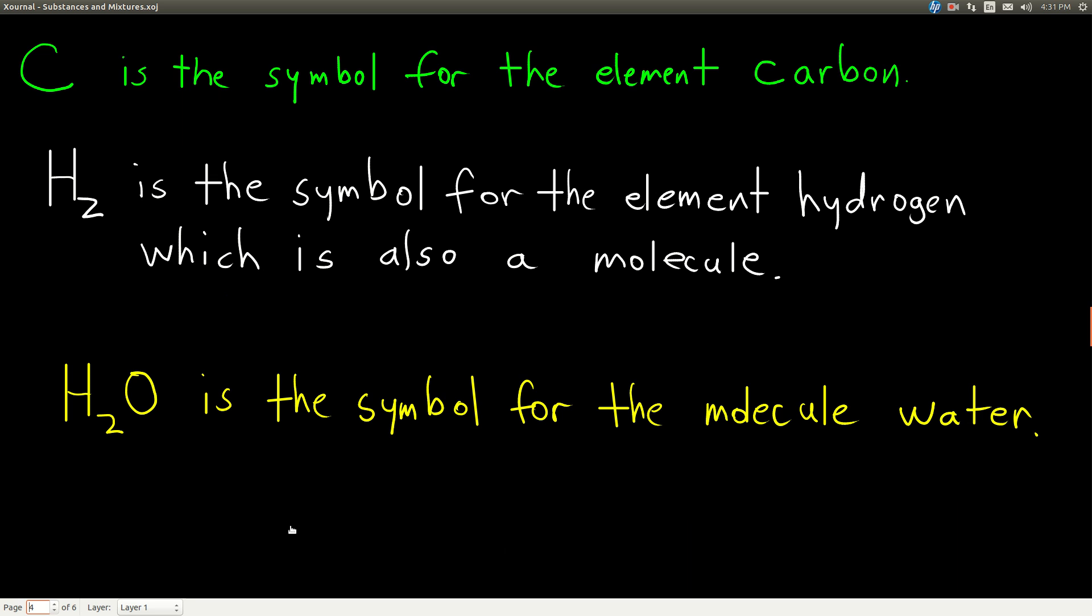For example, C is the symbol for the element carbon. If you have carbon, you can't break that down any further and still have it be carbon. It's an element.